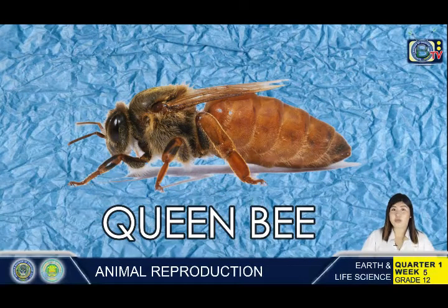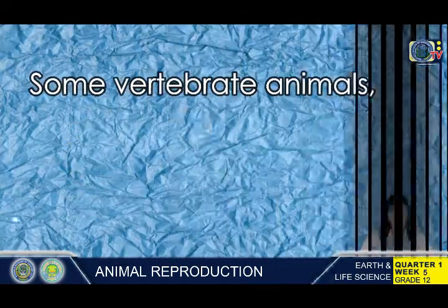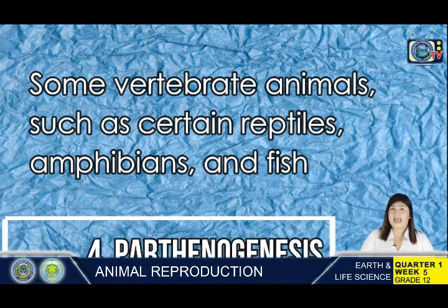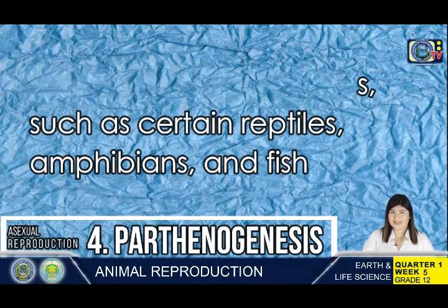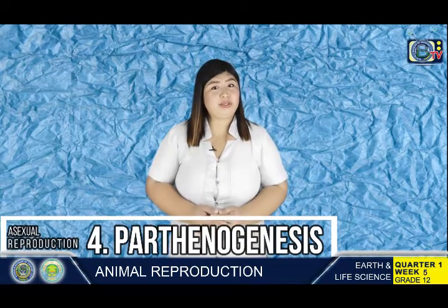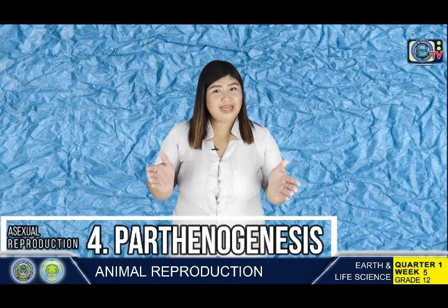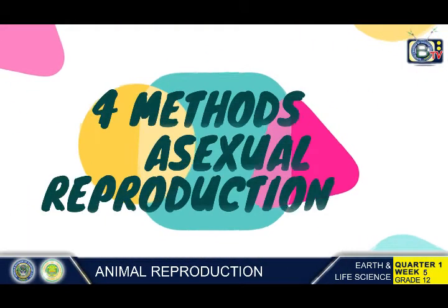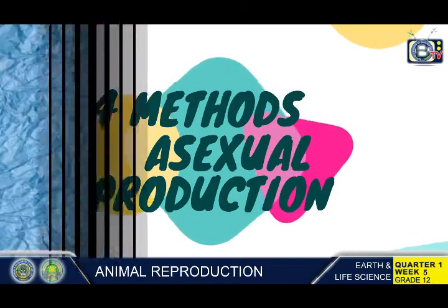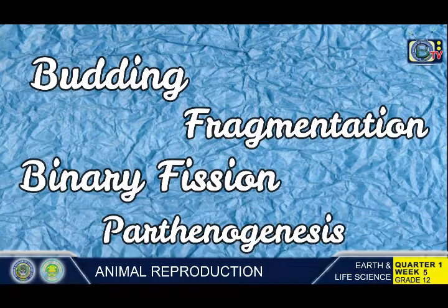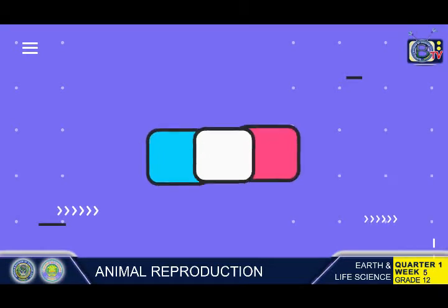Some vertebrate animals such as certain reptiles, amphibians, and fish also reproduce through parthenogenesis. Although more common in plants, parthenogenesis has been observed in animal species that were segregated by sex in terrestrial or marine zoos. In summary, there are four methods of asexual reproduction: budding, binary fission, fragmentation, and parthenogenesis.